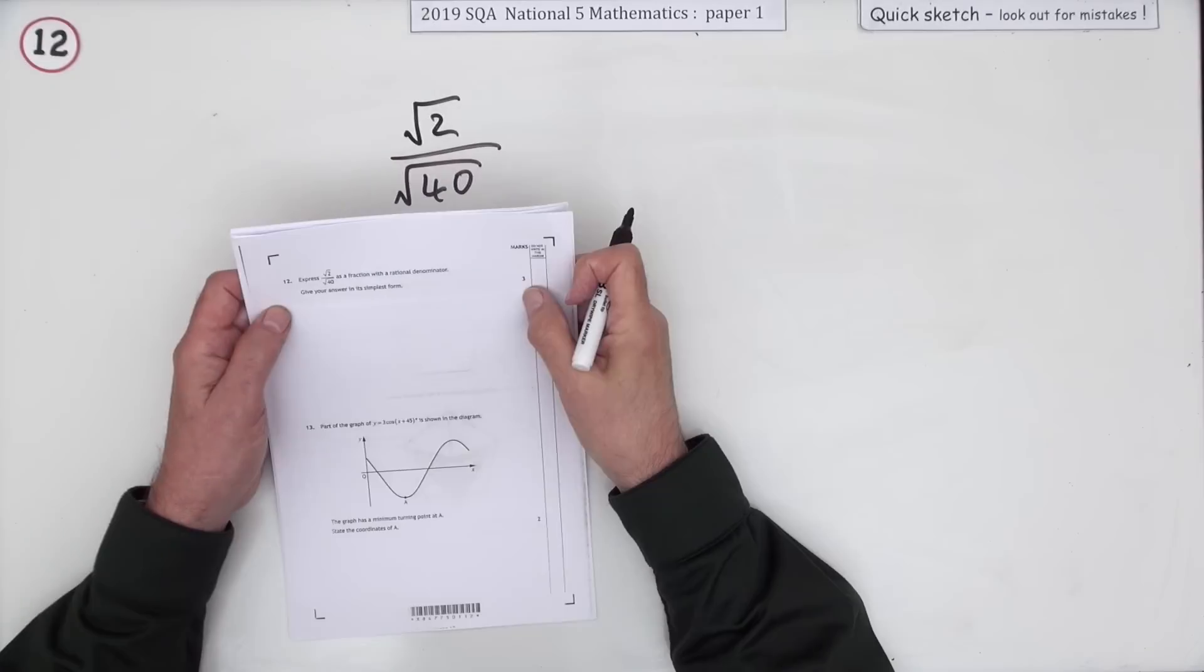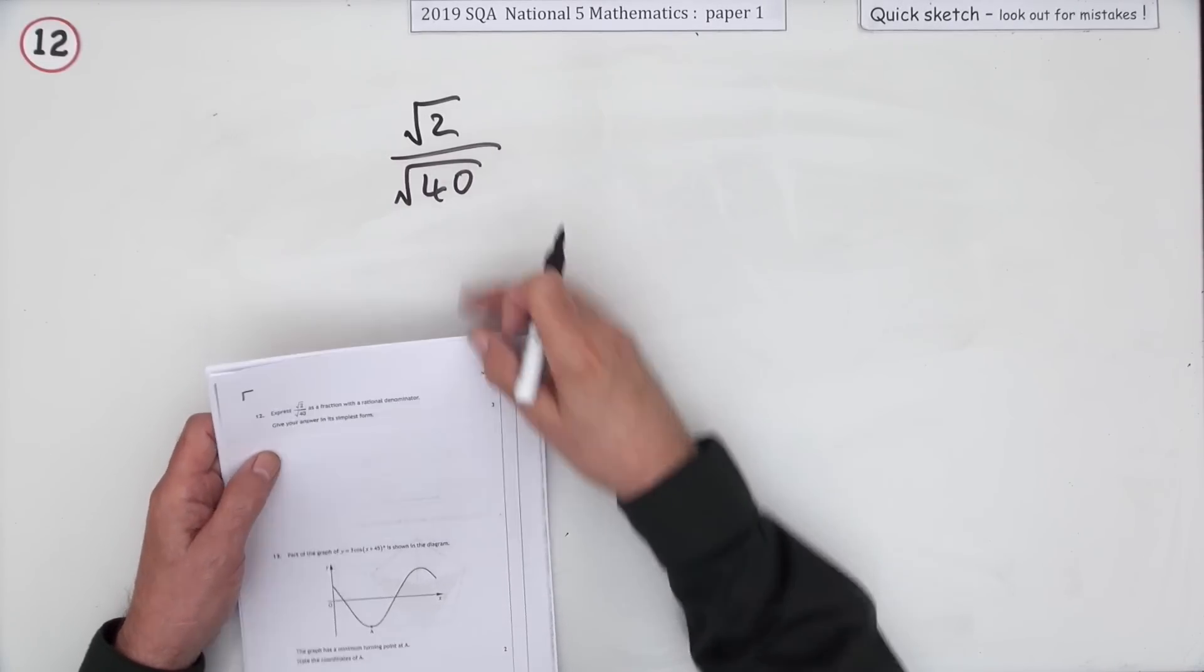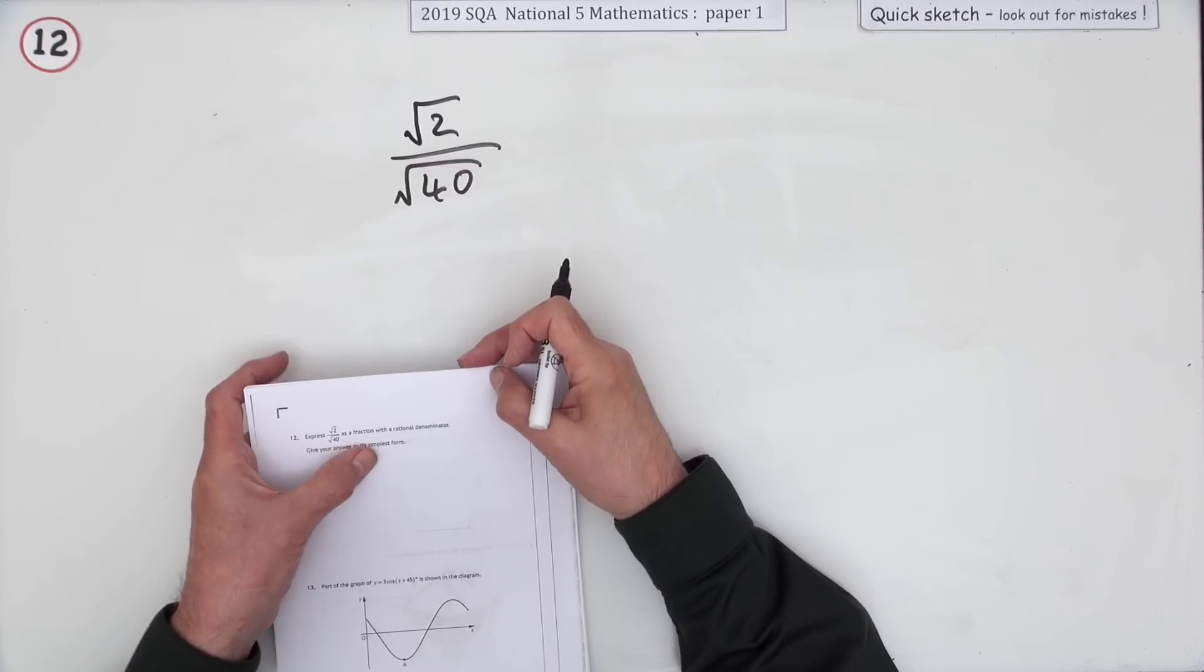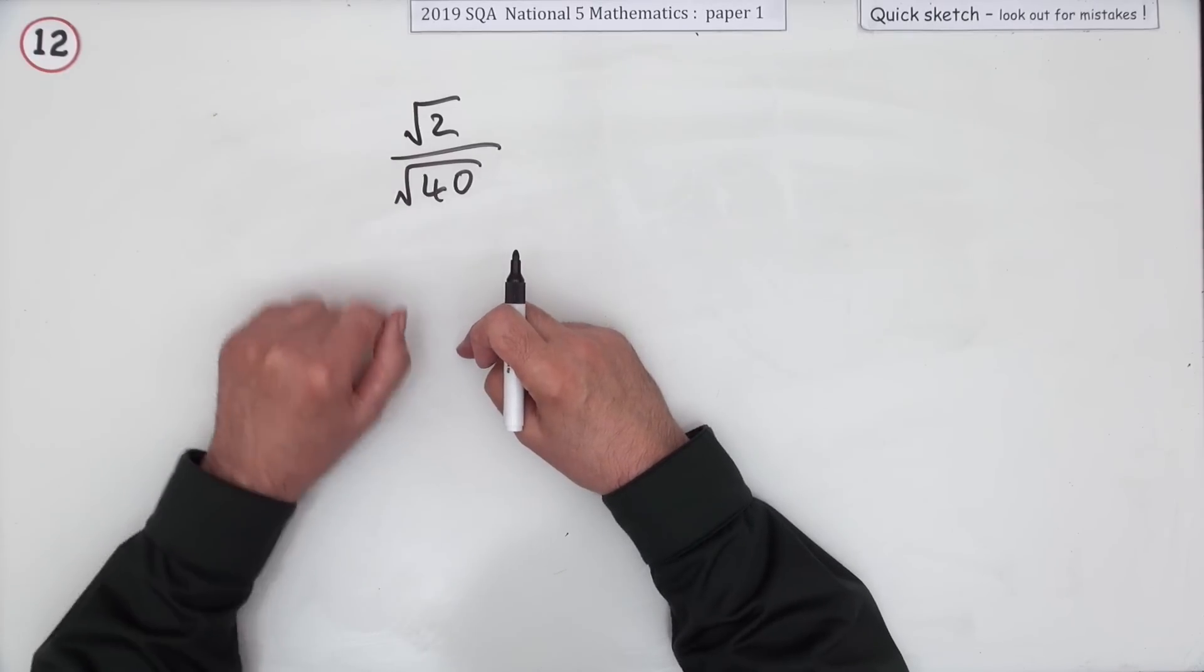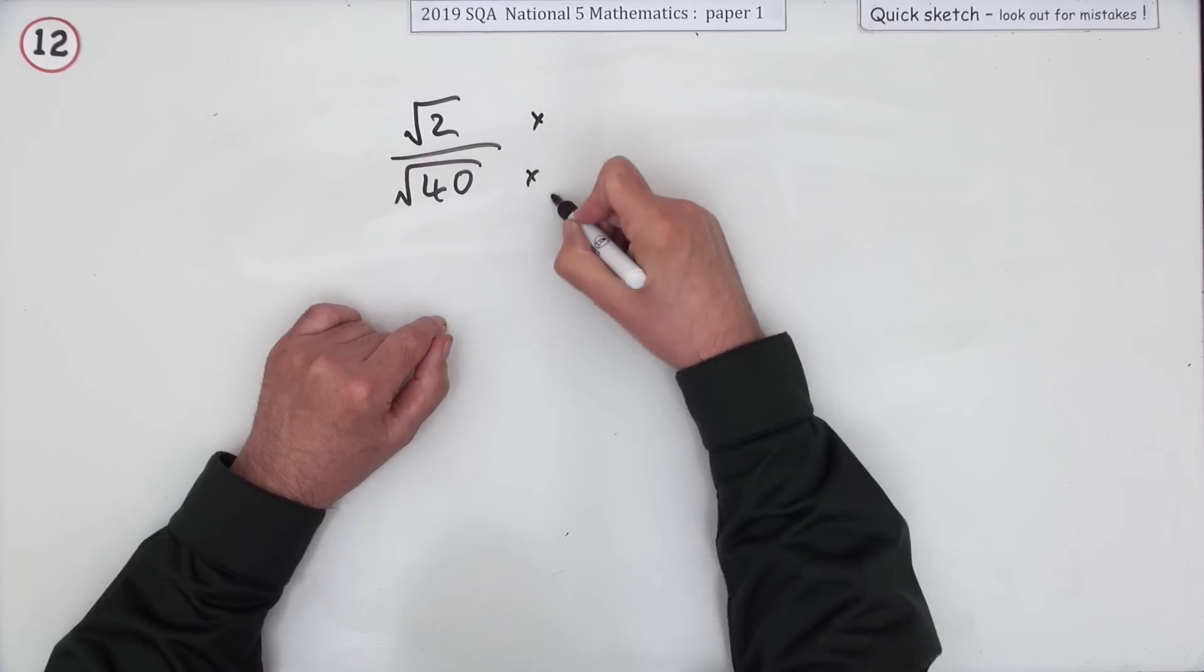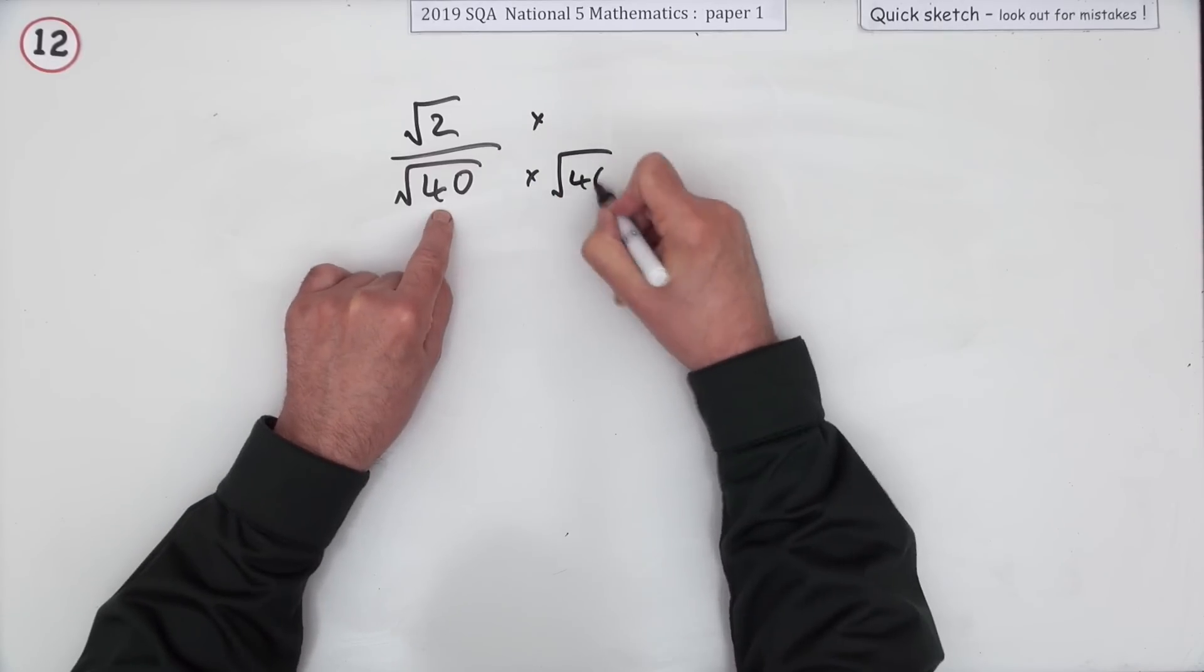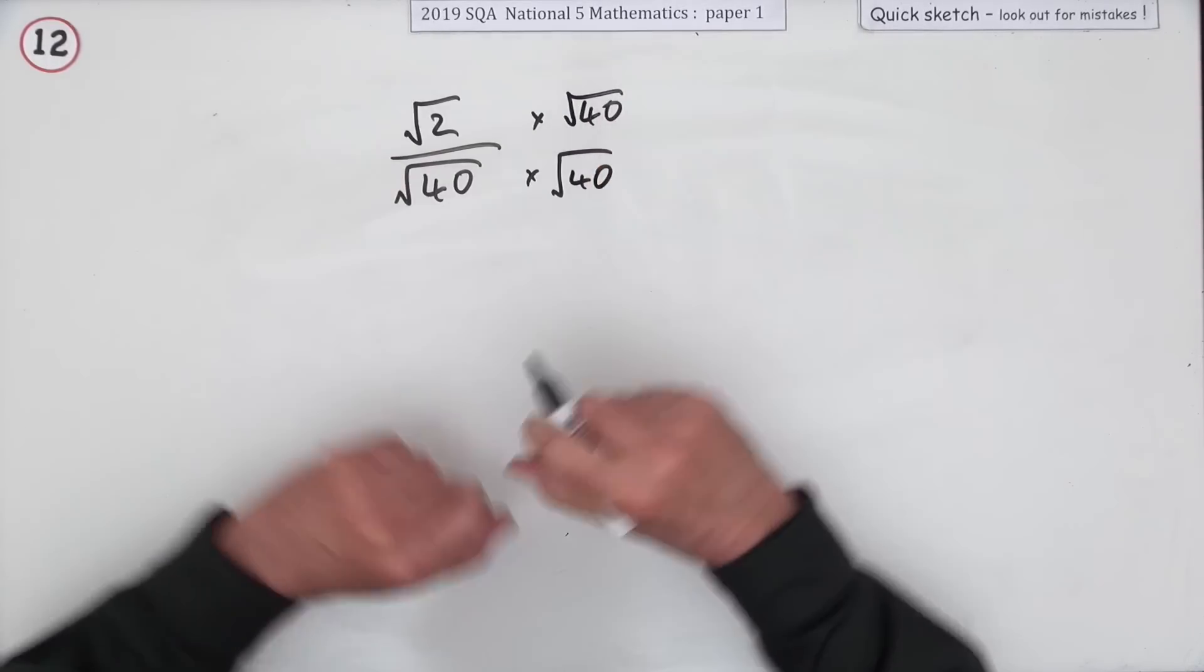Number 12 then. Three marks for expressing this fraction with a rational denominator and also make sure your answer is in its simplest form. So just now it's got an irrational denominator. You don't care what happens on top, but I want the bottom to be nice. Well, the way to do that is to multiply the square root of 40 by the square root of 40. That means you'll have to multiply the top also by the square root of 40 or you won't have the same fraction anymore.